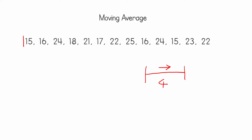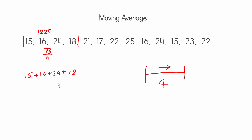Let's work through an example so we can understand it. Let's say our window size is four. In our data we place our window of size four on the first four items, starting from the left. We take those items — 15, 16, 24, and 18 — and we sum them all together. The summation gives us 73. Then we divide by four, which in this example gives us 18.25. This is the first number of our moving average time series.